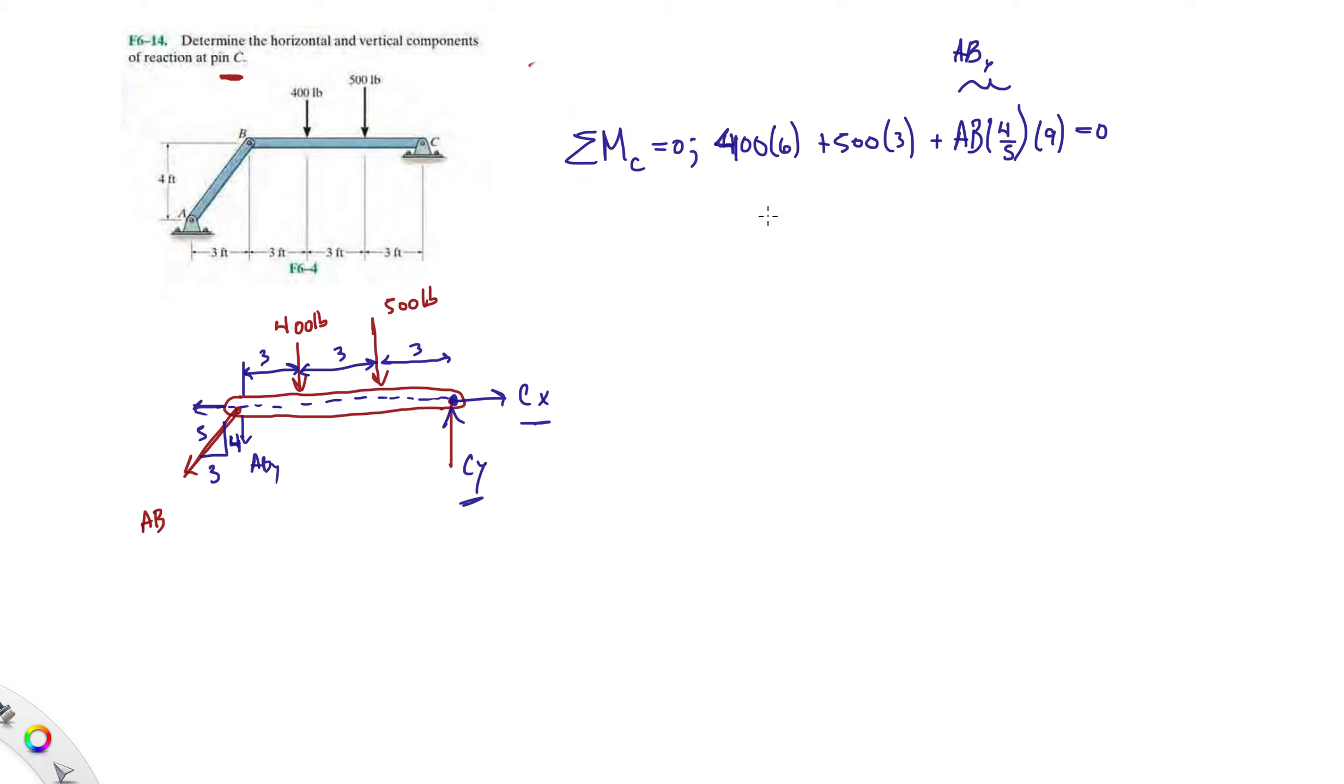The reason I chose it this way, I assumed tension just so you guys can see what's going to happen when we do this. We're going to isolate AB and we're going to end up getting a force of minus 541.7 pounds. That minus is telling me that it's actually not in tension, it's in compression.